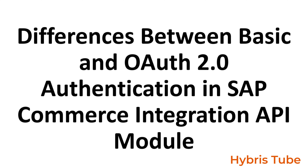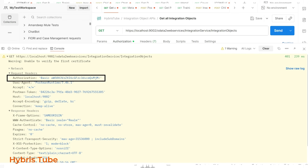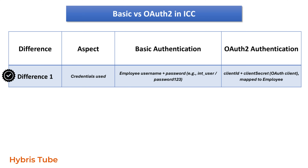Let's make the difference very clear: what is the difference between basic and OAuth2 auth type in the inbound channel configuration? The first difference is the credential used. In basic authentication, we use the employee username and password — for example, if the employee username is int_user and the password is password123, this combination is sent in the header while making a call to the Hybris system in the basic authentication setup.